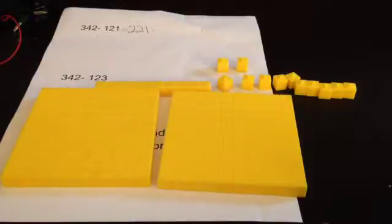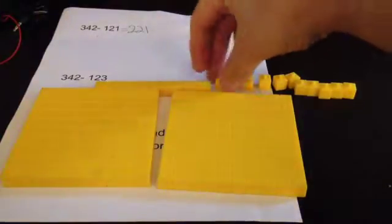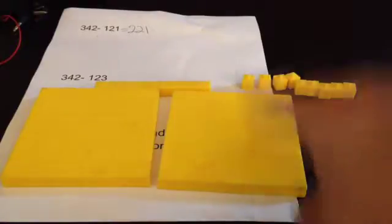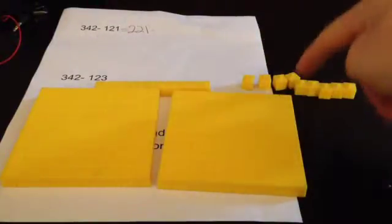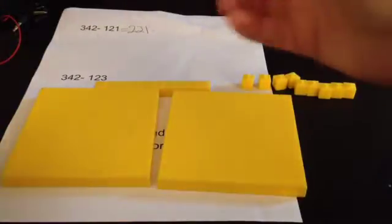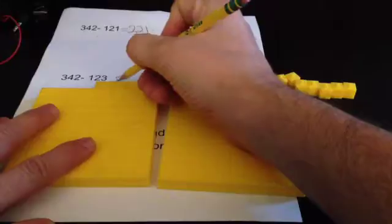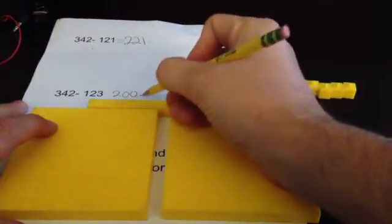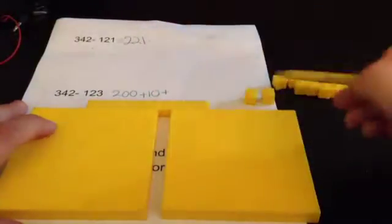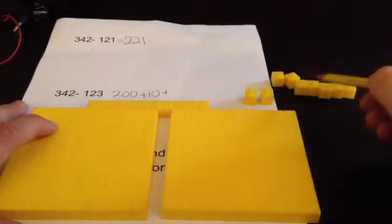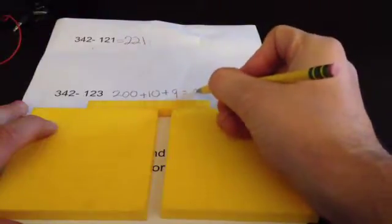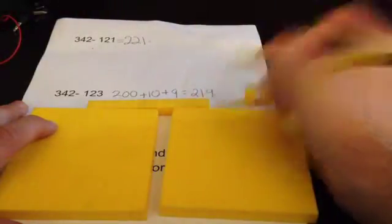But now, I need to take away 3 ones. Do I have 3 ones to take away? Yeah, I do. Take away 1, take away 2, take away 3. What am I left with? 100, 200, 2 hundreds, a 10, and 1, 2, 3, 4, 5, 6, 7, 8, 9 ones. 200 plus 10 plus 9, which is the same as 219.